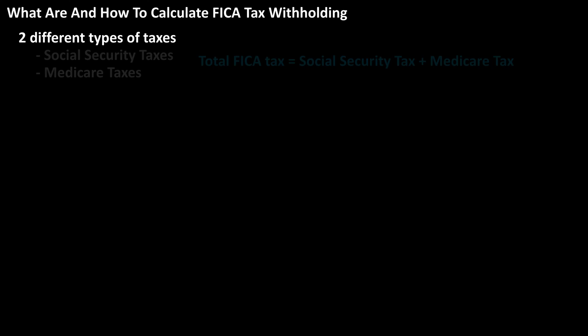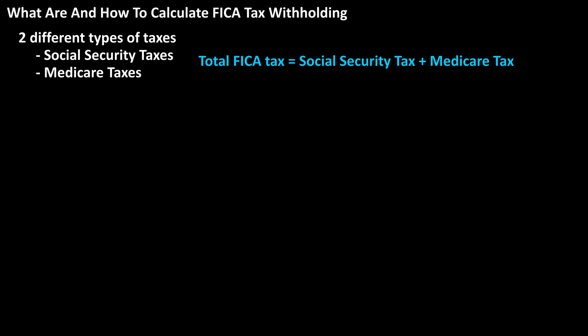FICA taxes are made up of two different types of taxes: Social Security taxes and Medicare taxes. We're going to go through the tax rates for each of these, and then we'll go through an example of how to calculate them, starting with Social Security taxes.